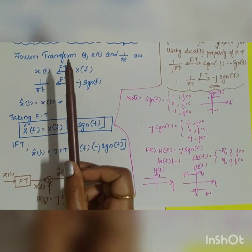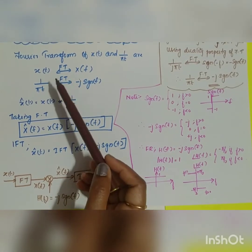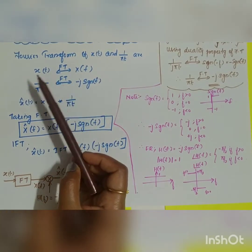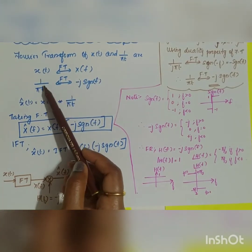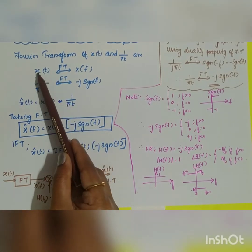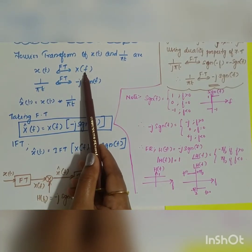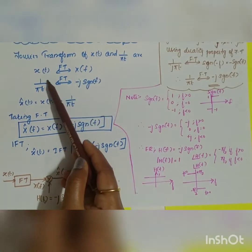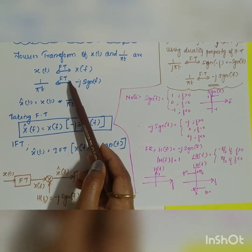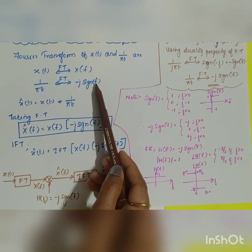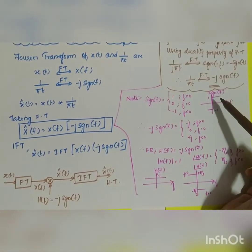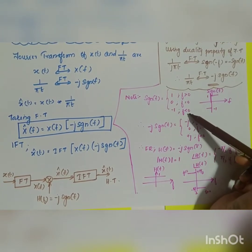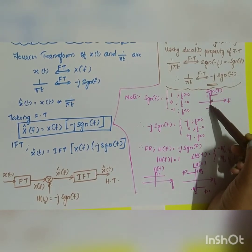The next topic is the interpretation of the Hilbert transform. Using a block diagram, the convolution of the input signal and the impulse response gives the output x̂(t). If we take the Fourier transform of the input x(t), we get X(f). For the impulse response h(t) = 1/πt, applying the Fourier transform gives H(f) = −j·sgn(f). The signum function sgn(f) equals +1 for f > 0, −1 for f < 0, and 0 for f = 0.